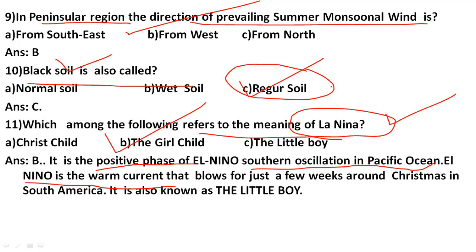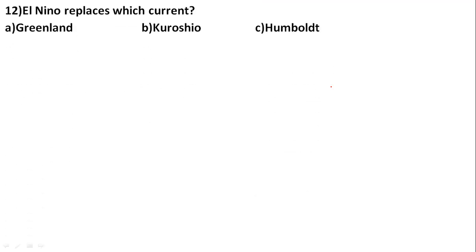El Nino is a warm current that blows for just a few weeks around Christmas in the South America and the Pacific Ocean region. During its positive phase, we are in the warm current phase — this is called the little boy or El Nino. El Nino replaces the Humboldt current in the ocean.